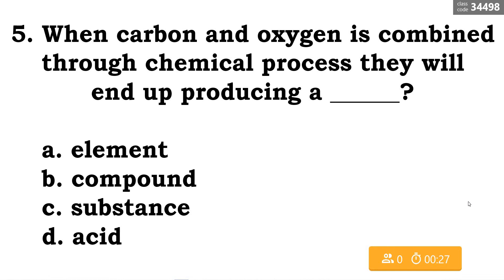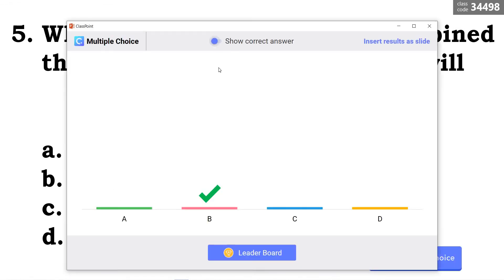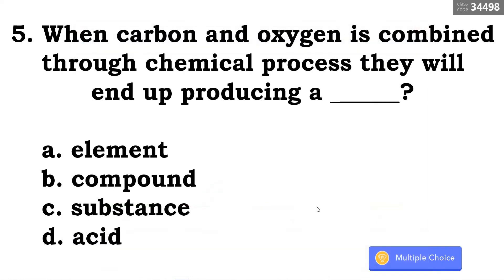For the last question of this review: when carbon and oxygen are combined through a chemical process, they will end up producing a blank — A. Element, B. Compound, C. Substance, D. Acid. The correct answer is letter B — compound. Congratulations to those who got it!